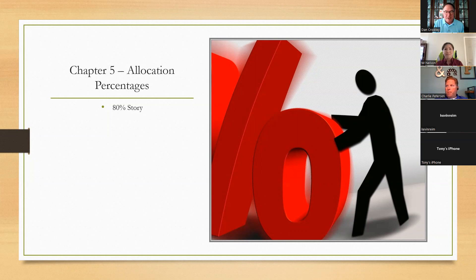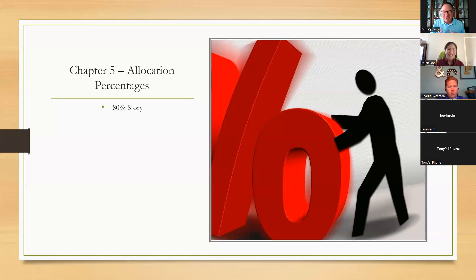Chapter five — Michalowicz does a good job with storytelling. He talks about the 80% story: a person attending a seminar where the speaker said if you do everything I tell you, you should be able to close 18% of your customers — but she heard 80%. She worked her way from closing 10%, then 25%, then 40%, then 75%, until she found the speaker who told her he said 18%, not 80%. She was clearly not hampered by anything other than herself — that's the lesson.